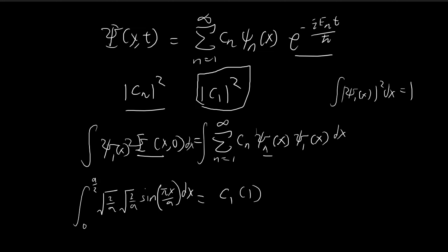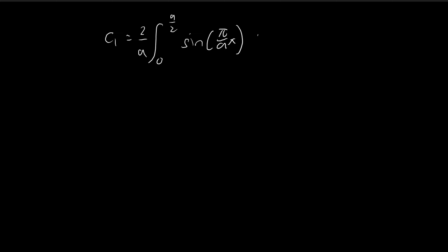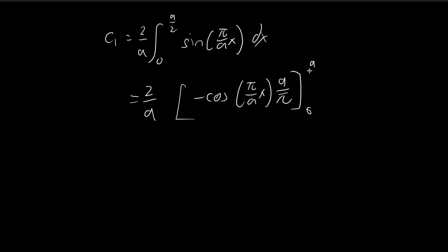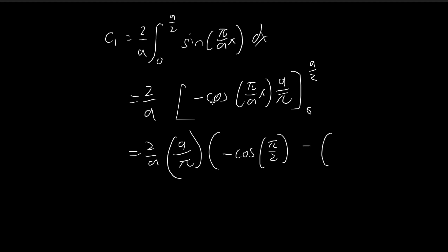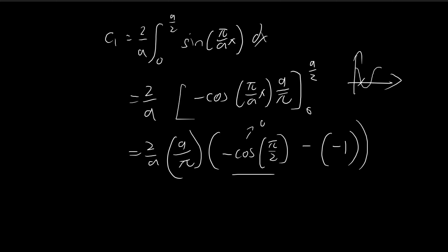So c1 is equal to this integral. We can pull the constants out — 2 over a — and then we have the integral of sine(πx/a) dx. Integrating gives negative cosine(πx/a) times (a/π), evaluated from 0 to A over 2. Substituting A over 2 in, we pull out the constant a over π. We get negative cosine(π/2) minus negative cosine(0). Cosine(π/2) equals 0, and cosine(0) equals 1, so minus negative 1 gives us positive 1. The result is c1 equal to 2 over π.